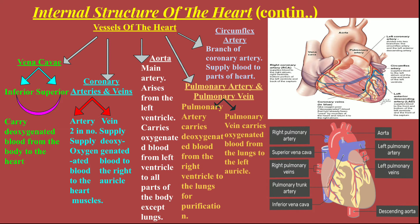Then come the coronary arteries and veins. These are the arteries and veins supplying and collecting blood from the heart muscles themselves. There are two coronary arteries which supply oxygenated blood to the heart muscles. The coronary veins carry deoxygenated blood from the heart muscles to the right auricle.